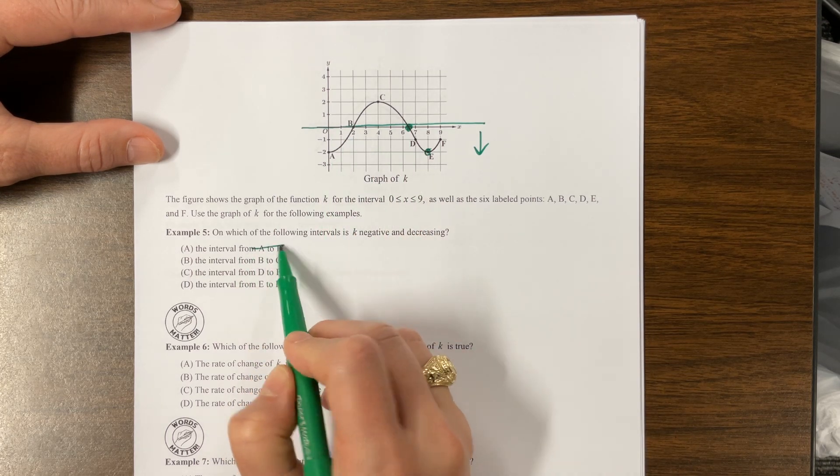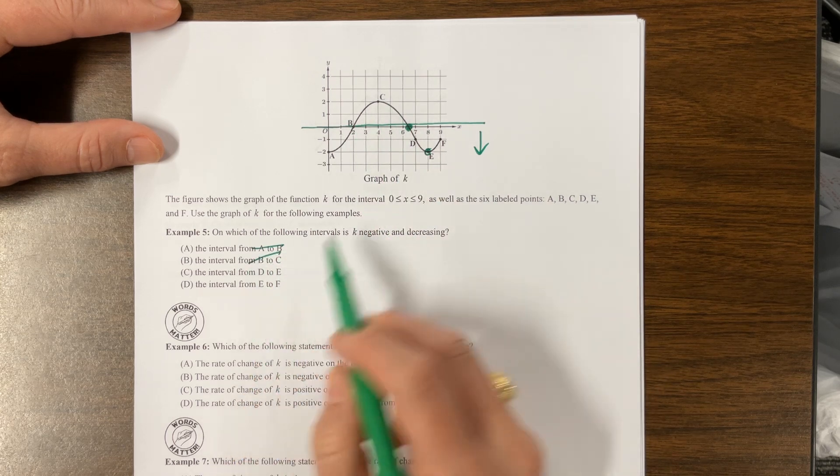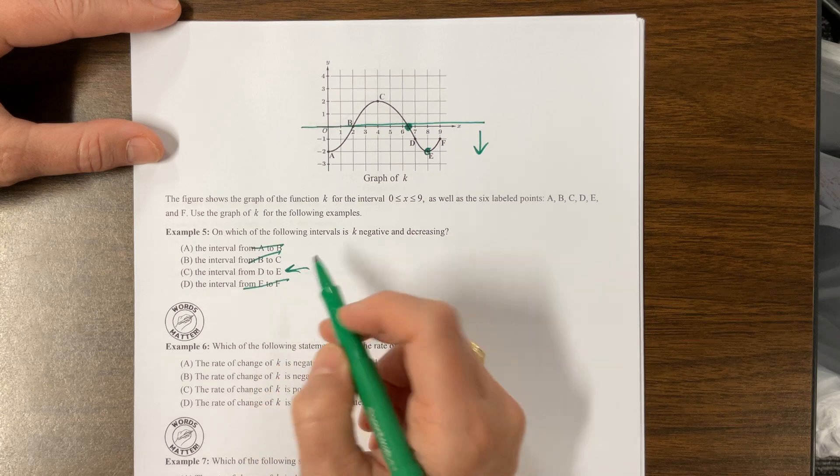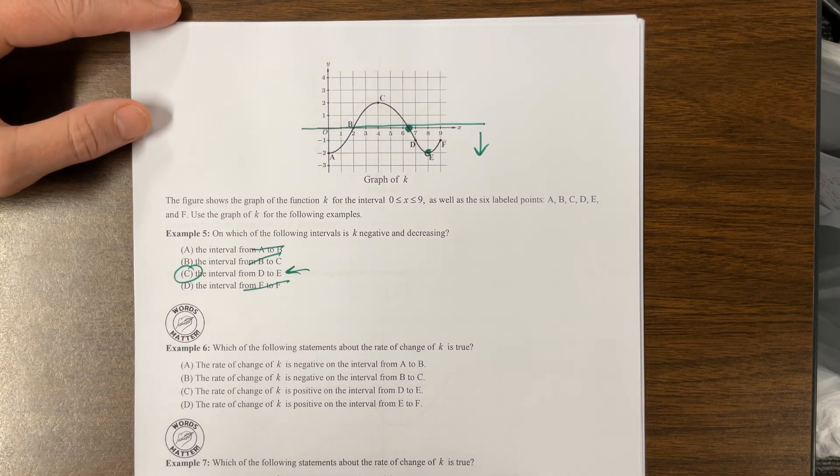It's definitely not A to B. It's definitely not B to C. It could be, yeah, D to E seems to work, and then E to F, it's definitely not that. So of our choices, the answer is C.